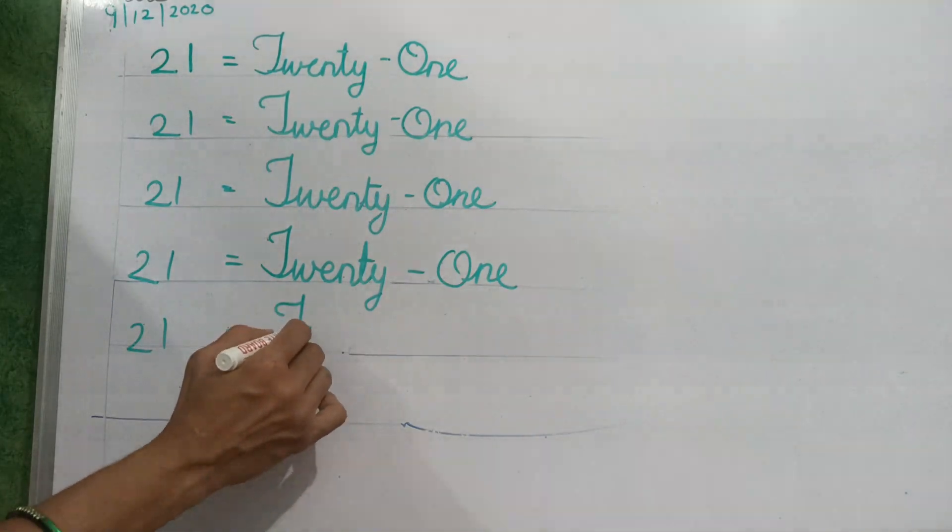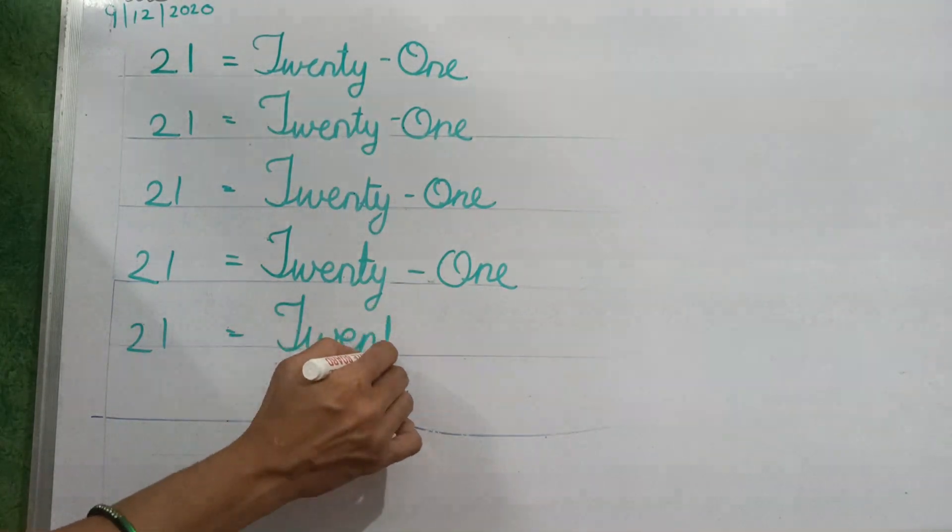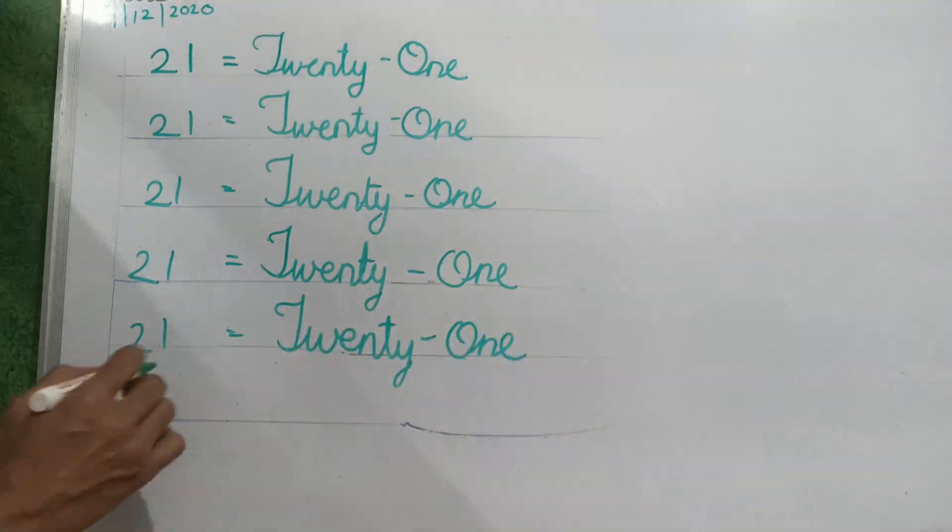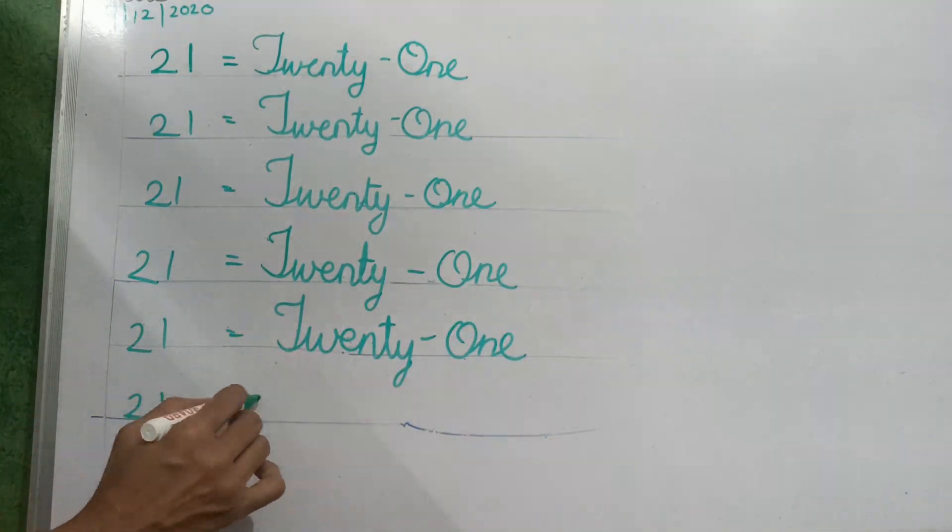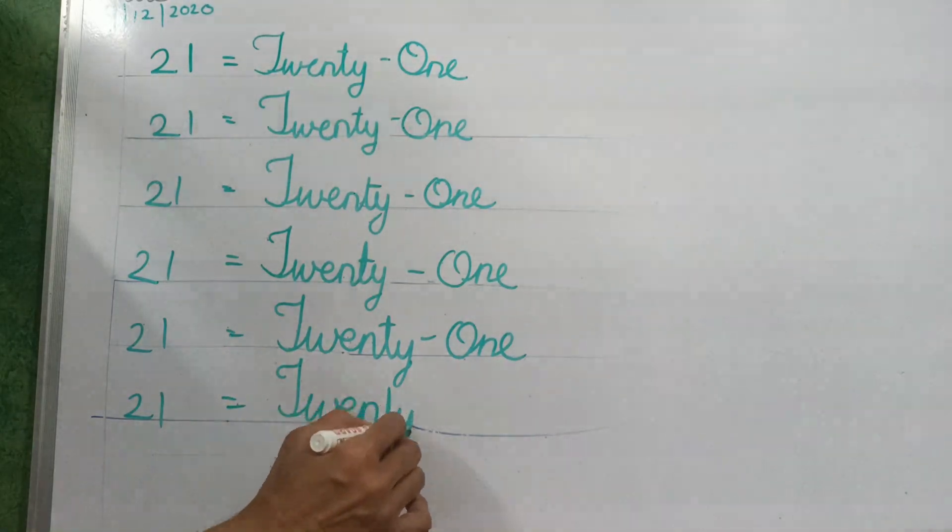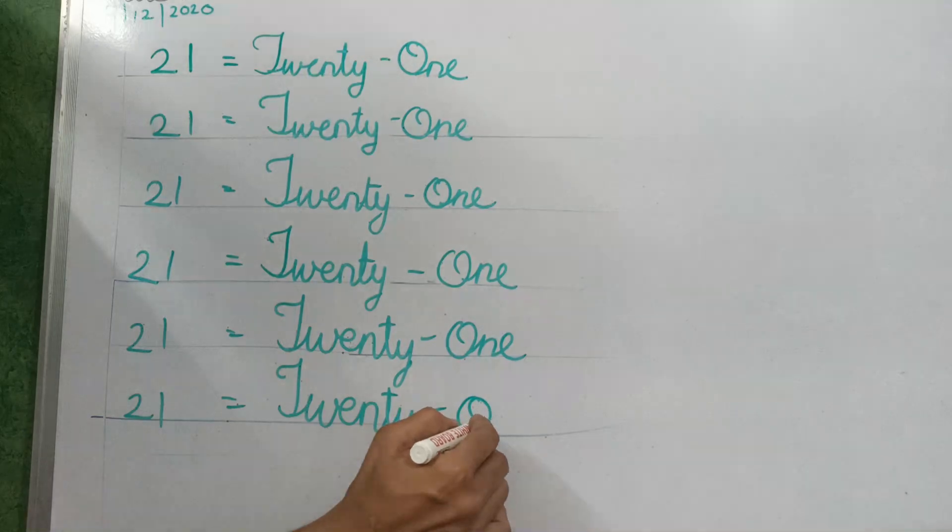21. T, W, E, N, T, Y, 20. O, N, E, 1. 21. T, W, E, N, T, Y, 20. O, N, E, 1. 21.